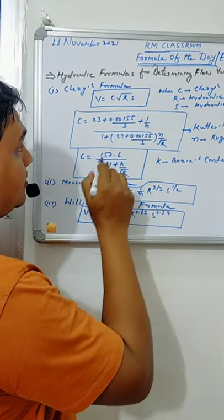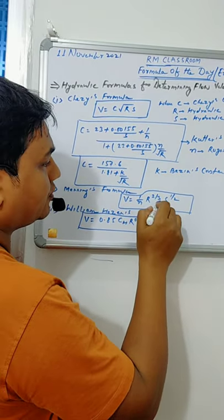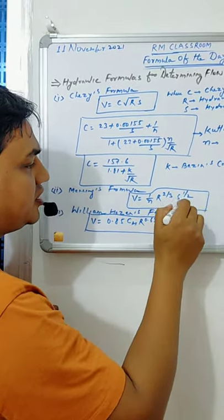The velocity can also be computed by Manning's formula: v is equal to 1 by n, r to the power 2 by 3, s to the power r, where r is the hydraulic radius, s is the slope, and n is the Manning's roughness coefficient.